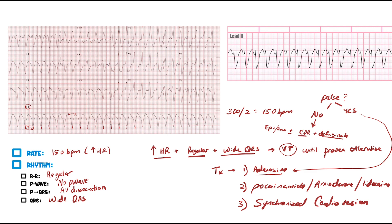The difference between defibrillation and synchronized cardioversion: with synchronized cardioversion, you deliver an electrical signal that tracks the R wave specifically. With defibrillation, it shocks anywhere within the cardiac cycle. That's why it's important to know the difference between the two.